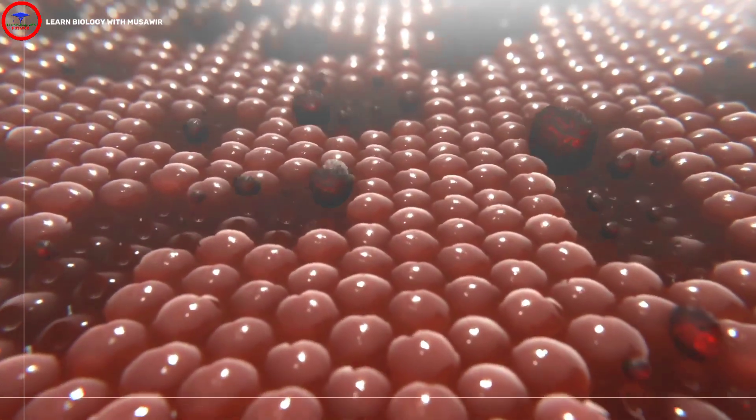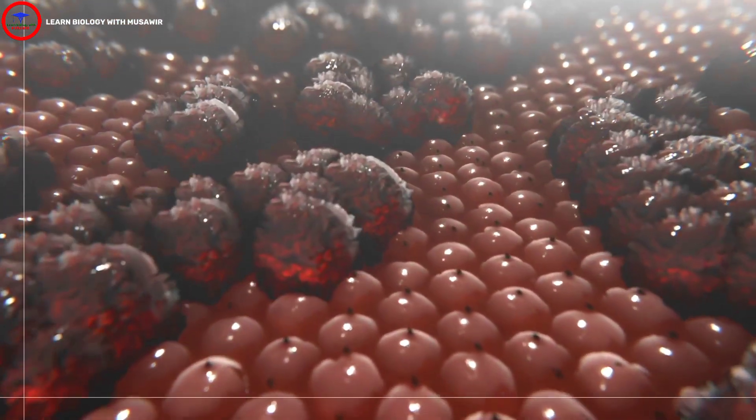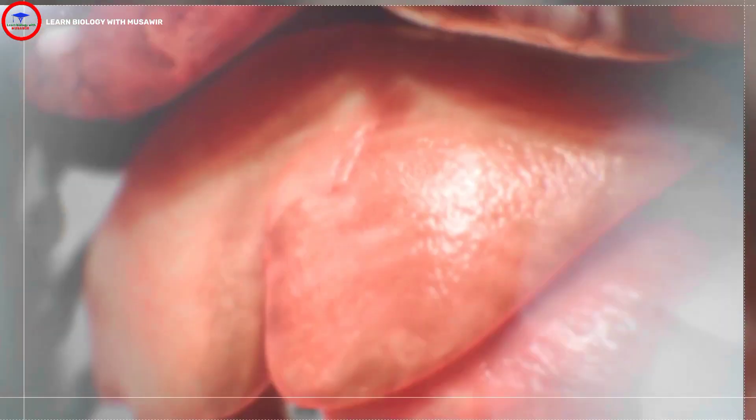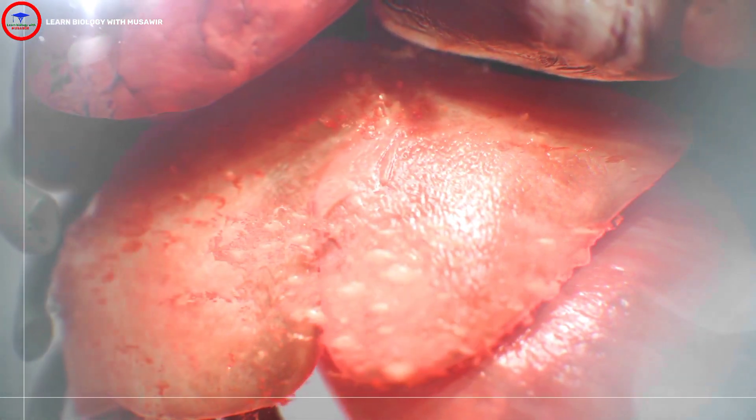Healthy liver cells die and are replaced with scarring called cirrhosis. As the scar tissue grows, your liver has less healthy tissue.